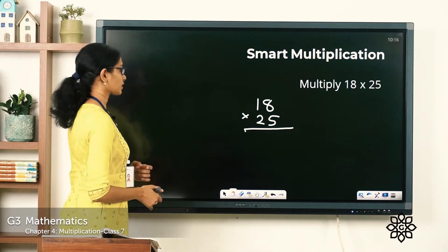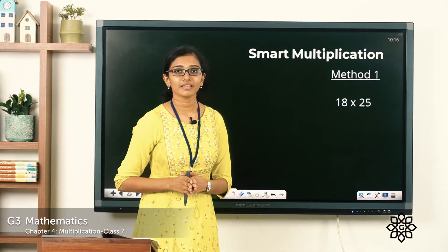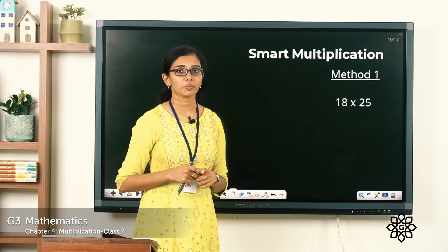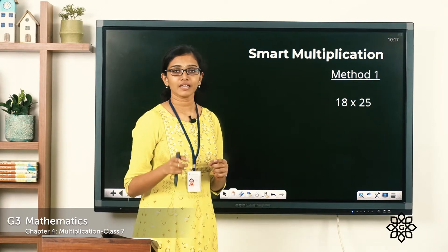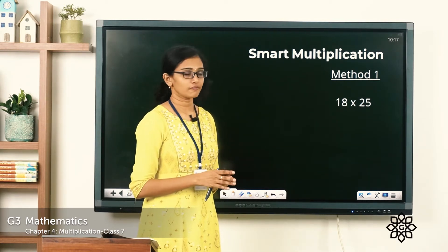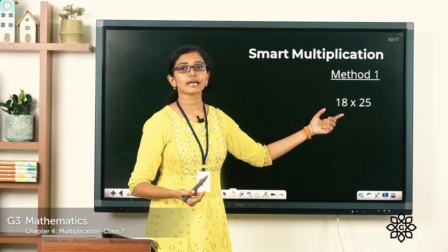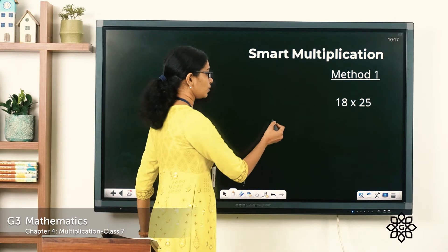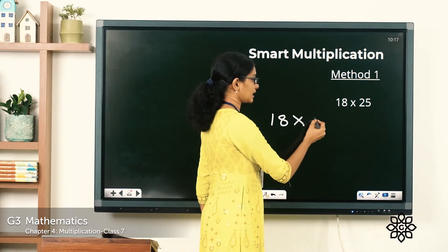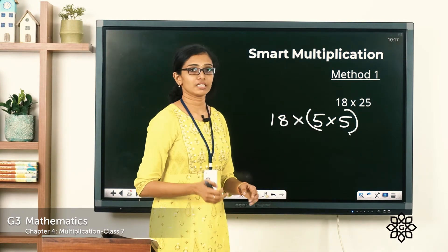So let's learn a different method today. Our question is 18 into 25. We know all the multiples of 5 end in either 5 or 0, so when you multiply a number with 5 or 0, it's comparatively easier. Here we have a multiple of 5 which is 25, so I'm going to split this 25 in terms of its factors — in terms of 5. I'm going to rewrite this 25 as 5 into 5. So 18 into 25 can also be written as 18 into 5 into 5. I have split this 25 in terms of its factors in terms of the number 5.